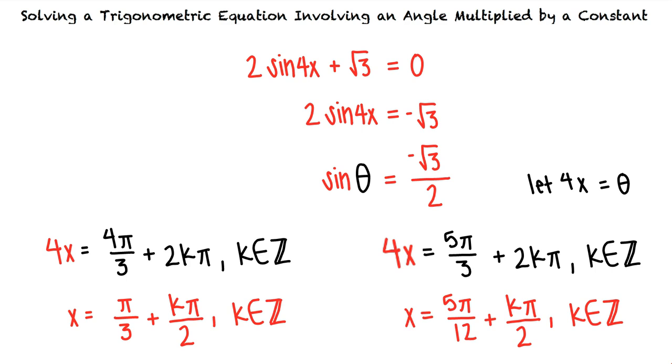Okay, I think I understand this topic. When solving trigonometric equations involving an angle multiplied by a constant, we should substitute theta for the angle multiplied by a constant and then solve for theta. At that point, we can use our solution for theta to solve for the original variable. That's exactly right. Great work!